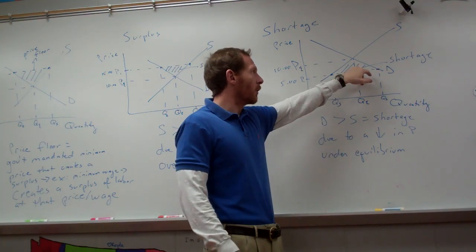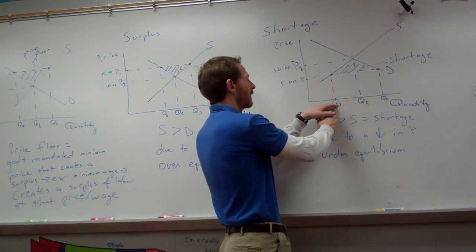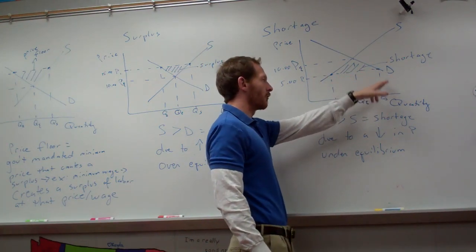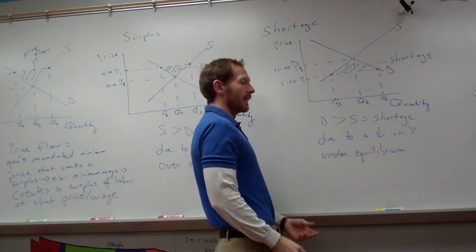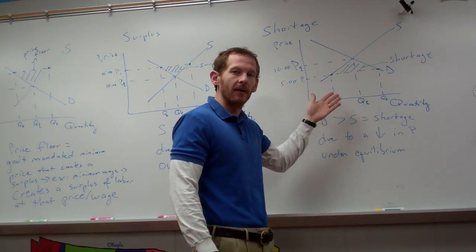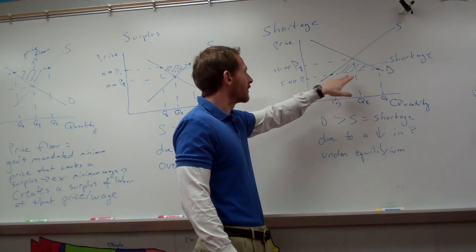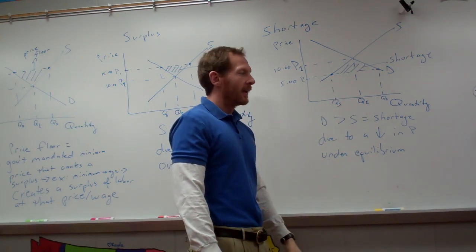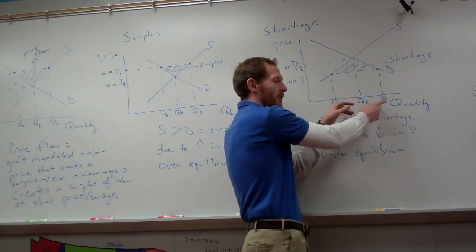So what's happened is it's created a shortage. The supply is where P sub 1 hits the supply curve, and when P sub 1 hits demand, you drop down to Q sub E. You can see D is greater than S. Since it's a change in price, it's a change in quantity demanded and a change in quantity supplied, and so it creates a shortage. This whole area from Q sub S to Q sub D is the shortage.